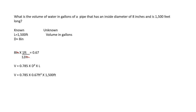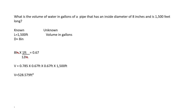We're going to go ahead and plug all of this into our math equation: 0.785 times 0.67 feet squared times the length of 1,500 feet. Breaking that down: 0.785 times 0.67 feet times 0.67 feet times 1,500 feet. That gives you an answer of 528.579 cubic feet — again, cubic feet because you had feet times feet times feet. We're going to go ahead and round this to 528.6 cubic feet.